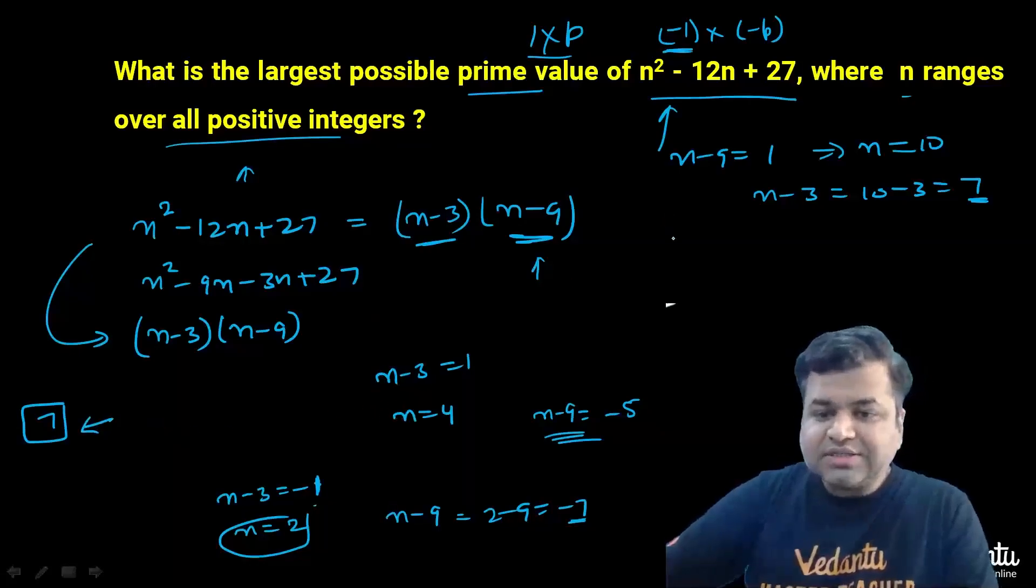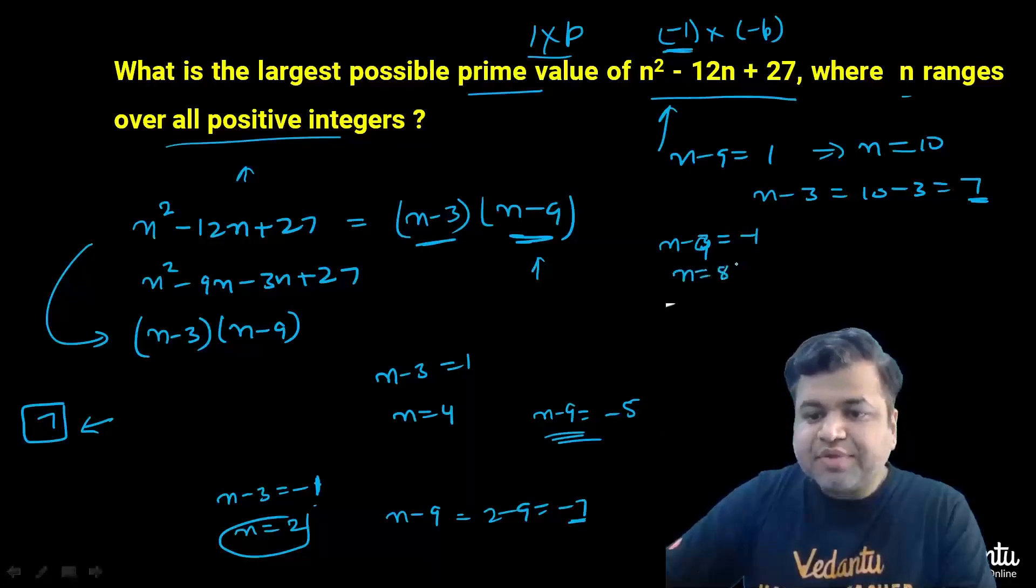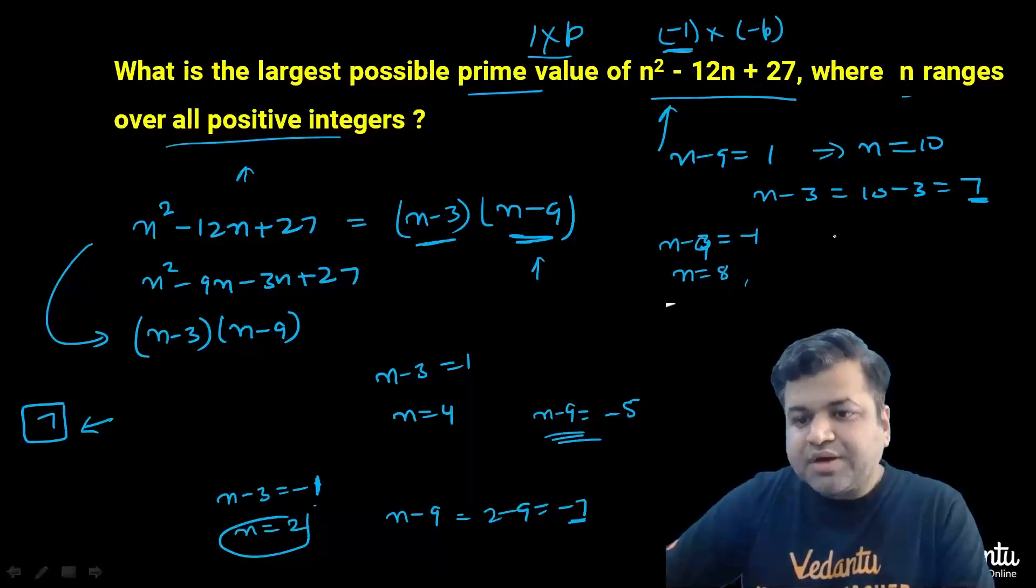Now let's consider the scenario when n - 9 is -1. So n will be nothing but 8, and in that scenario n - 3 will be simply 5. But then the product will be 5 times (-1) which is a negative prime number. But we are interested in only positive prime numbers.